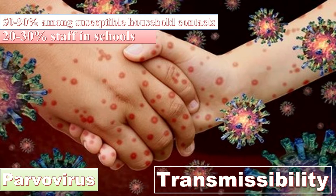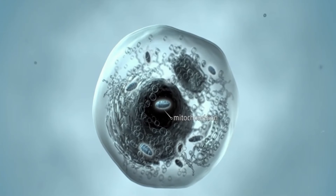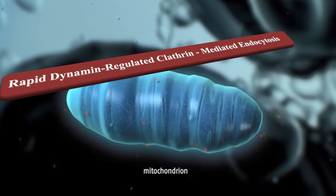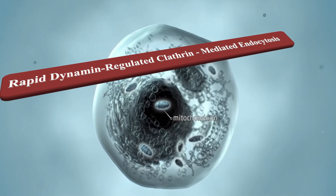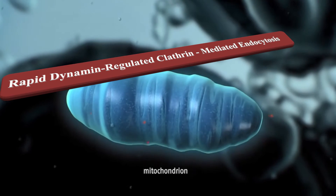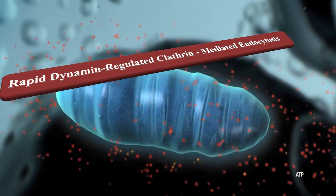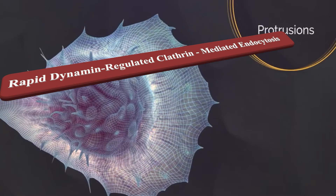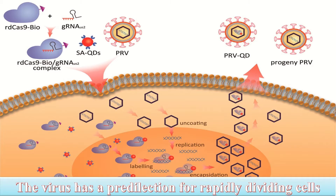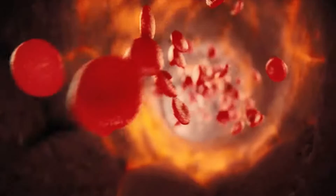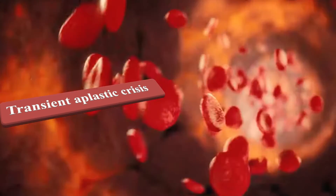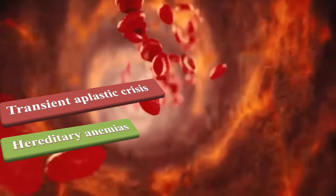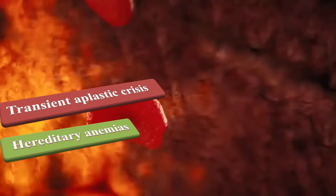20 to 30 percent of susceptible staff in schools during outbreaks are affected. Cellular uptake and infection by parvovirus involves rapid dynamin-regulated clathrin-mediated endocytosis, followed by slower intracellular trafficking. This virus has a predilection for rapidly dividing cells. It causes transient aplastic crisis in sickle cell disease and hereditary anemias including spherocytosis, thalassemia, pyruvate kinase deficiency, and autoimmune hemolytic anemias.